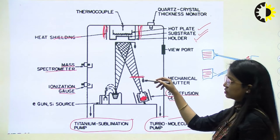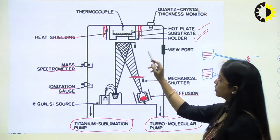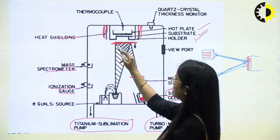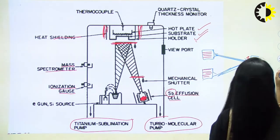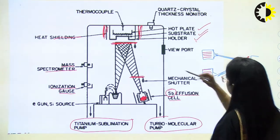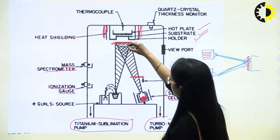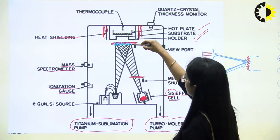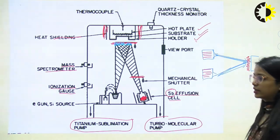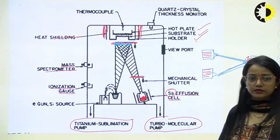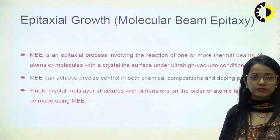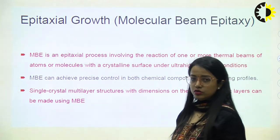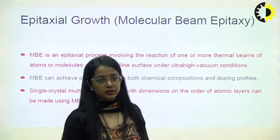When the shutter is open, the material will go and settle on the wafer. On this wafer we will have the accumulation, and we will call it epitaxial growth — which is molecular beam epitaxy.